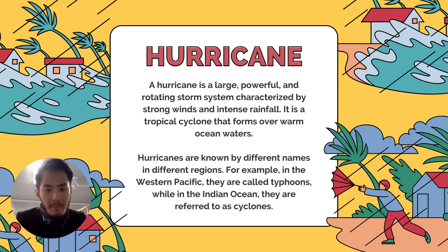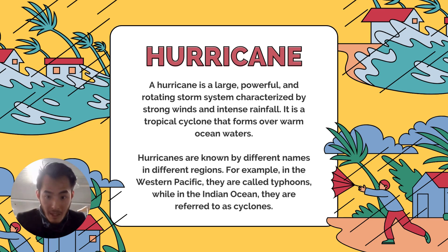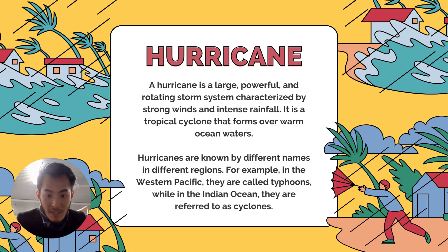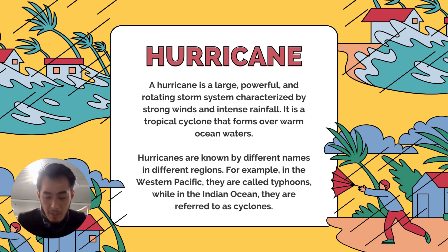One example of natural disasters is hurricanes. It's a tropical cyclone, so it happens in tropical countries. In different places they have different names — in the Western Pacific it's known as typhoons, and in the Indian Ocean, especially in Asia, it's known as cyclones. Hurricanes are very powerful; everything gets sucked into them and it's very difficult to escape. They cause a lot of damage to houses, vehicles, and the general environment.